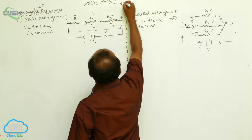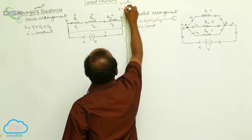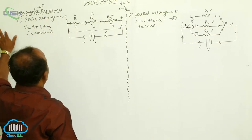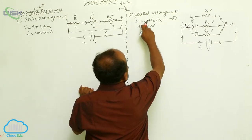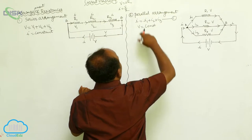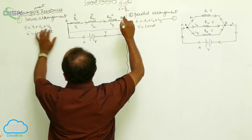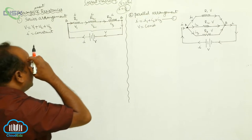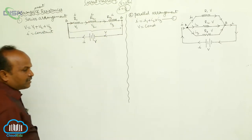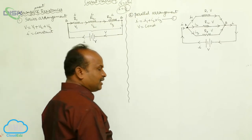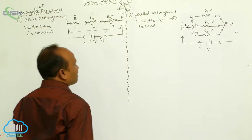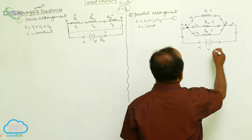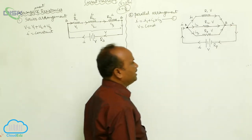According to Ohm's law, V equals IR, therefore I equals V by R. In series we need V1, V2, V3 potentials; in parallel we need I1, I2, I3 currents. In series, always use the V-related formula; in parallel, use the I-related formula. R1, R2, and R3 are the three individual resistances; after connecting in series, the effective resistance is Rs. After connecting in parallel, the effective resistance is Rp.